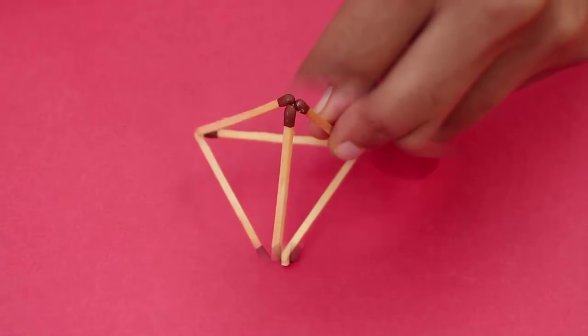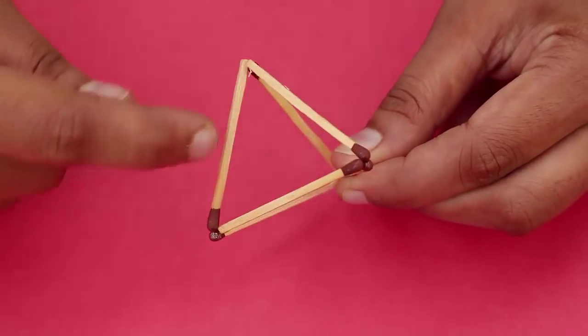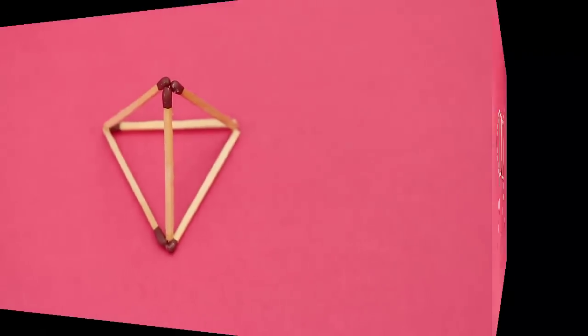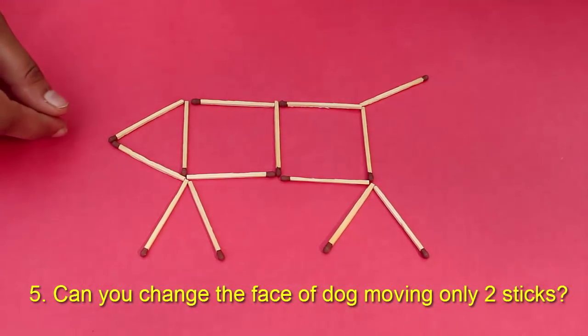Hold the three matchsticks on top and place them on the three vertices of the equilateral triangle to make a tetrahedron with four triangles.